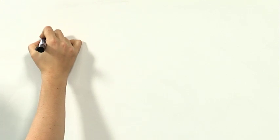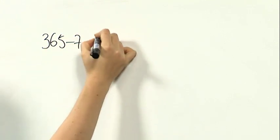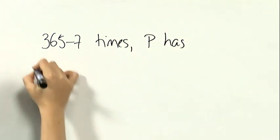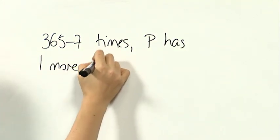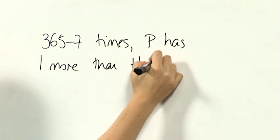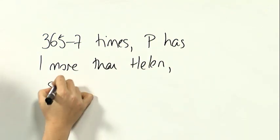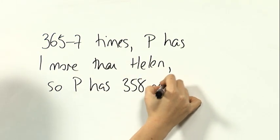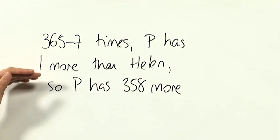And we've seen that there are 7 relevant factors of 366. So the rest of the time, 365 minus 7 times, Phil has one more than Helen. So Phil has 358 more than Helen from these occasions.